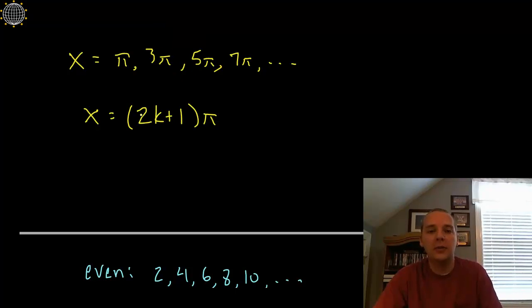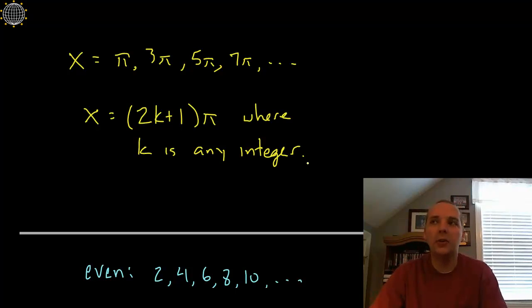So our final answer is we would say we have discontinuities where x = (2k+1)π—that's 1π, 3π, 5π, 7π, et cetera—where k is any integer. We have to specify what k is, and it should be said it doesn't have to be a k—you could use an n or a j. There are different letters that are used. I just arbitrarily chose k.